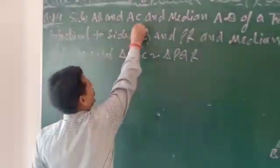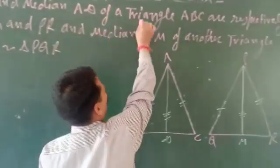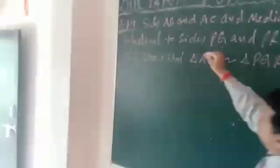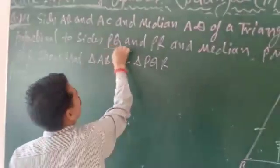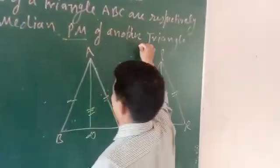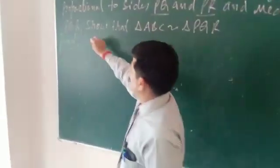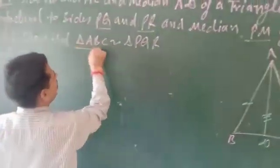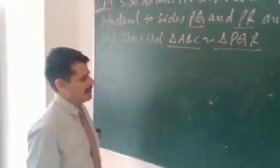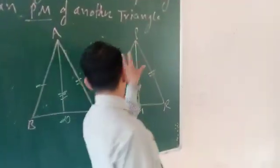Side AB and AC and median AD of triangle ABC are respectively proportional to side PQ and PR and median PM of another triangle PQR, so that triangle ABC is similar to triangle PQR. This is the second triangle of triangle ABC and PQR.